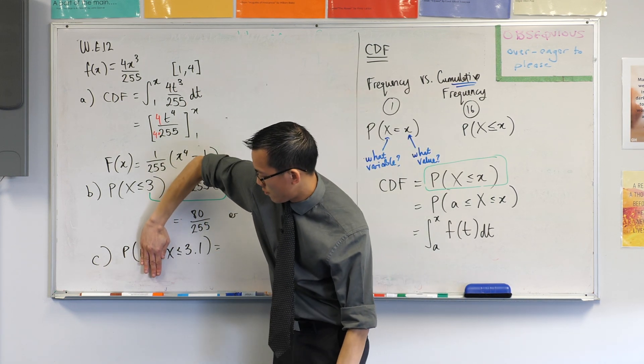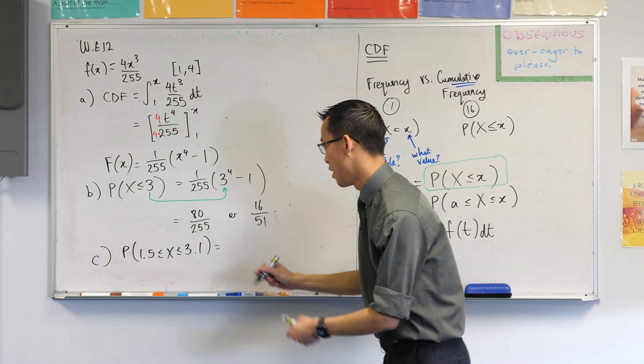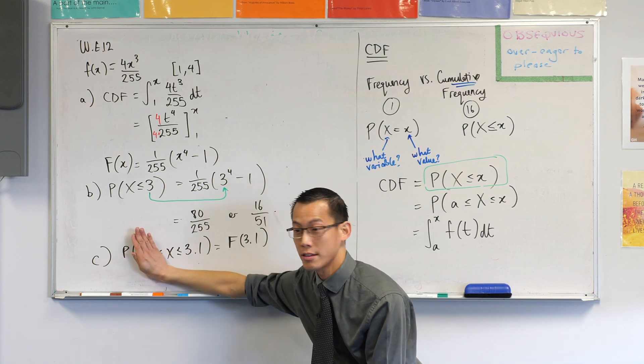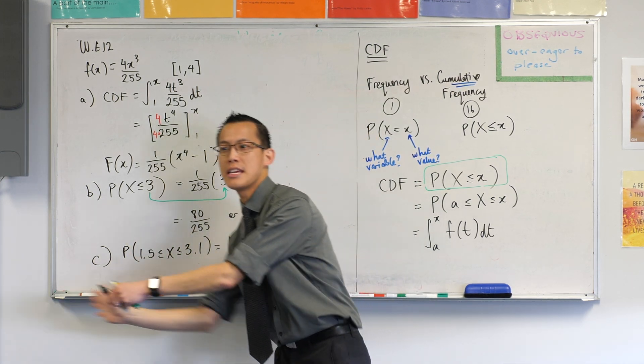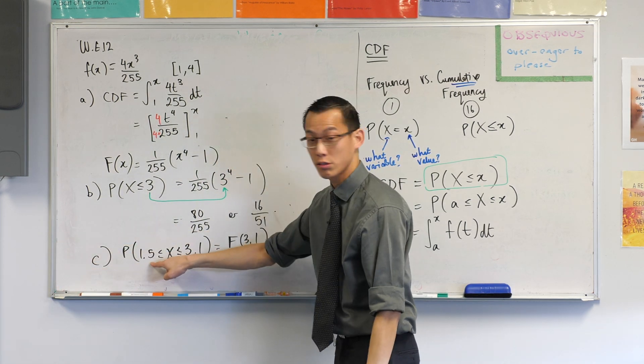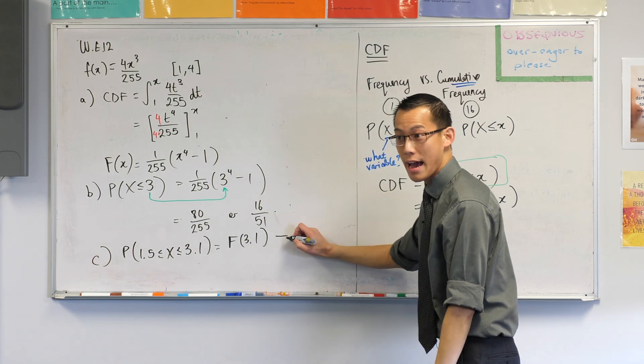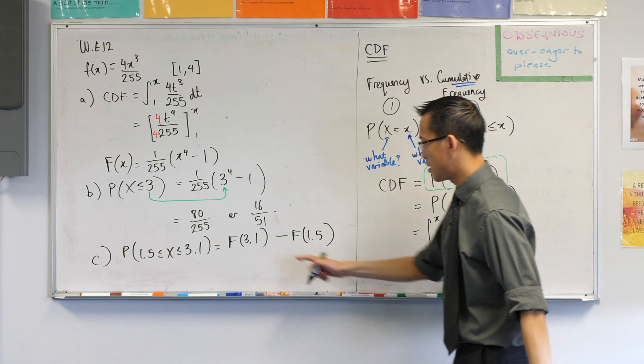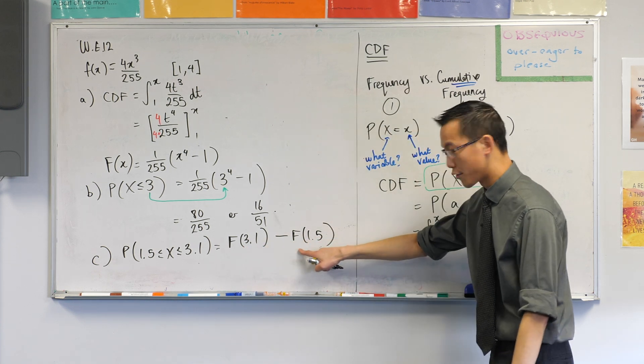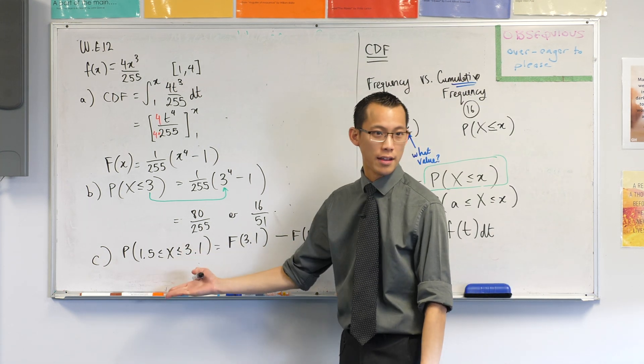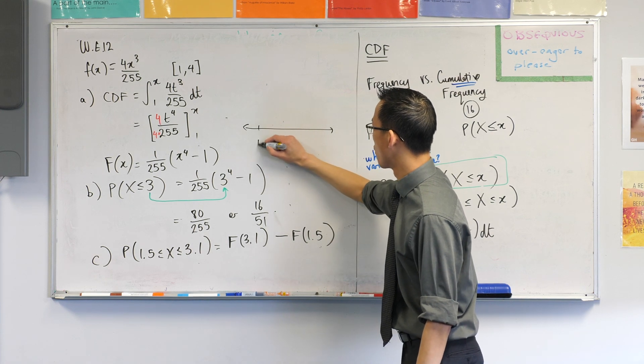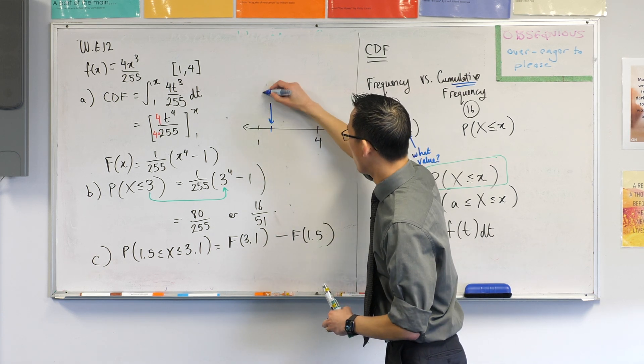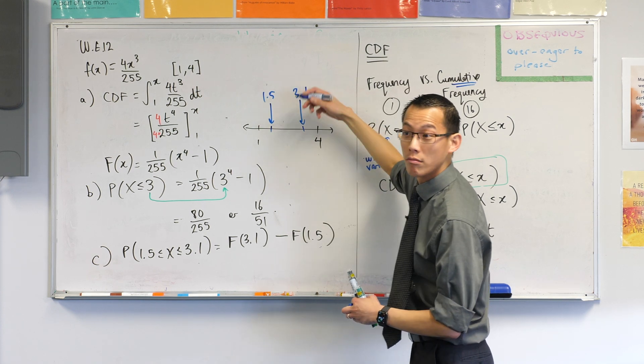So how do I use this guy to find out this? Well, imagine if this was the question: X is less than or equal to 3.1. We know how to find that. We would just say, put in 3.1 into your cumulative distribution function. That would find out that. But you're like, now I don't want the stuff beneath 1.5. I don't want all those probabilities, because I want to exclude them. So that's okay. I will just subtract all those probabilities from 1.5 and before. So that's F of 1.5. Does that make sense? So this is everything from the start to 3.1. This is everything from the start to 1.5. So the difference between those is the part that you're interested in.